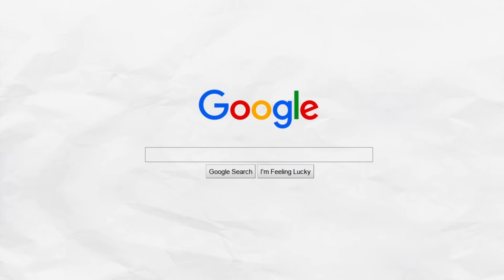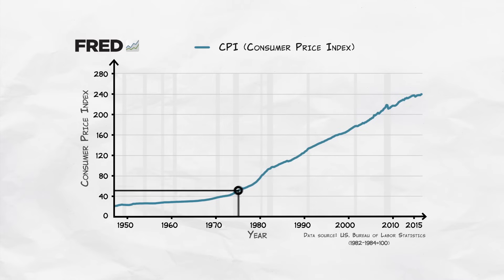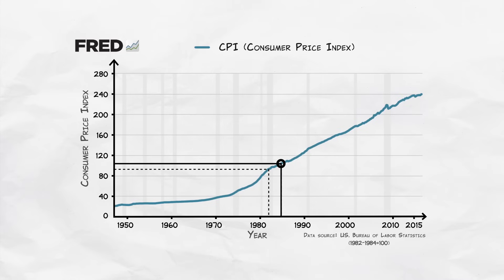So let's take a look at the inflation rate in the United States as measured by the CPI. If we Google 'Inflation United States FRED,' we'll find a graph like this. The graph shows us the CPI. This index is defined so that the average price in the years 1982 to 1984 is set equal to 100.